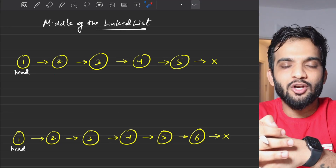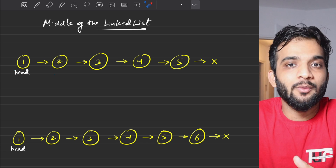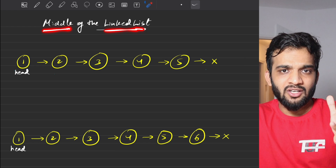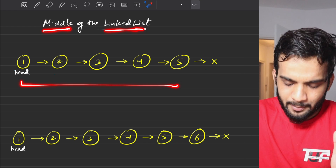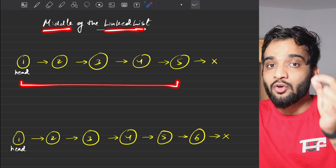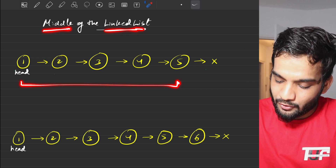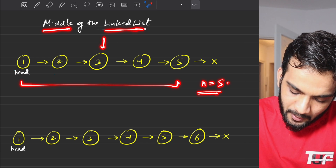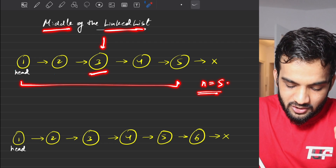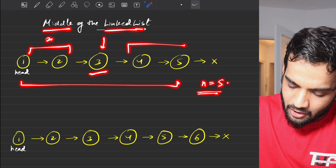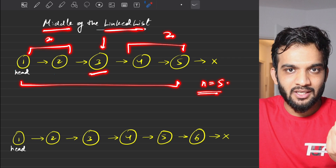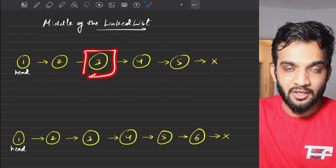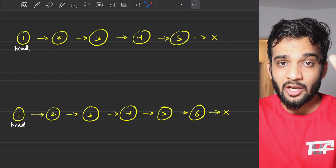Let's continue the playlist. The problem we are going to solve today is finding the middle of a given linked list. You'll be given a linked list and you have to return the node which is the middle of that linked list. For this linked list with five nodes, the middle node is the one where on the left we have two elements and on the right we have two elements. You'll return the entire node, not just the value.